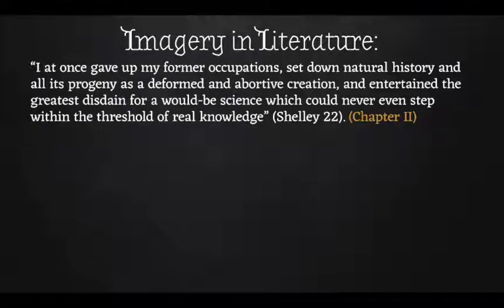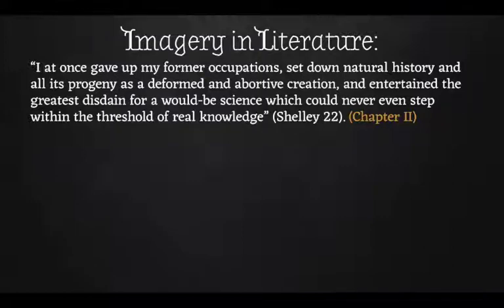This is a passage from the beginning — page 22 in the edition I had you buy, or chapter 2 if you're using a different edition. Remember, the book starts out with letters from Walton, and then within his letters we have chapters where Victor Frankenstein narrates, telling his life story to Walton. So this is a story in a story. This is chapter 2 of Victor Frankenstein's story within Walton's letters. I'm just going to read this to you, and then we're going to talk about how we dissect difficult passages like this and picture the imagery being created.